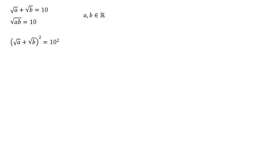If we square the left hand side, we're going to end up with root a times root a, which is just a, root b times root b, which is b, and we're going to end up with two lots of root a times root b. And this is all going to equal 10 squared, which is 100.